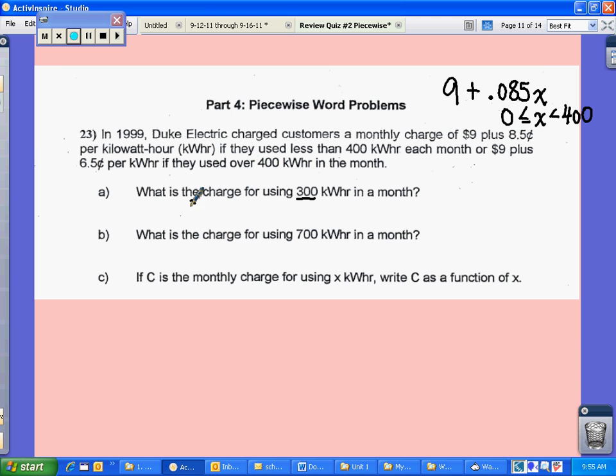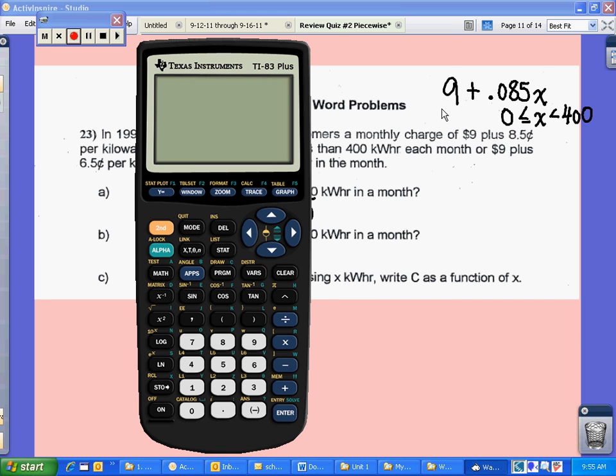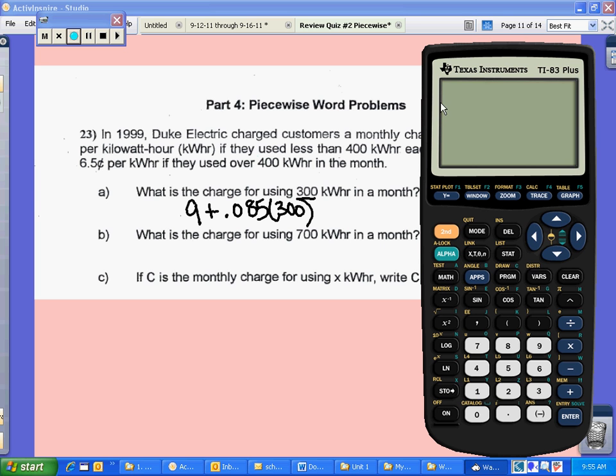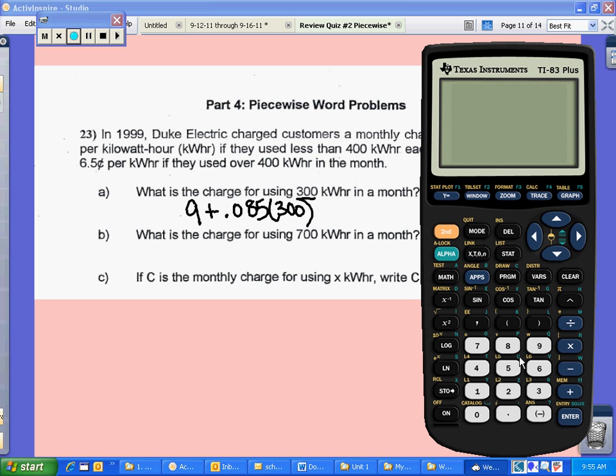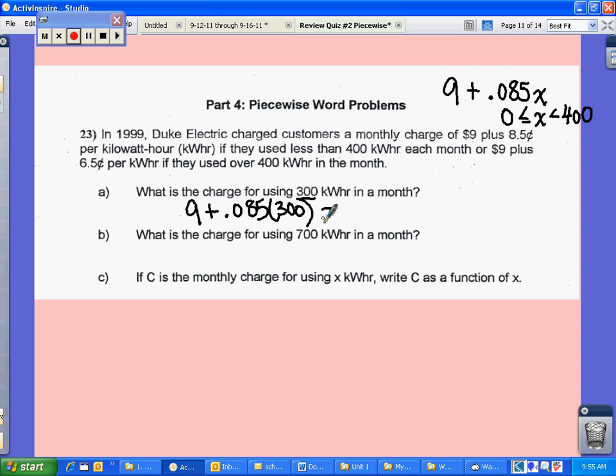So I'm going to take 9 and I'm going to add to that .085 and multiply it by the 300. So now you can plug this into your calculator to get a value. So you're going to say 9 plus .085 times 300. And that's going to cost you $34.50.